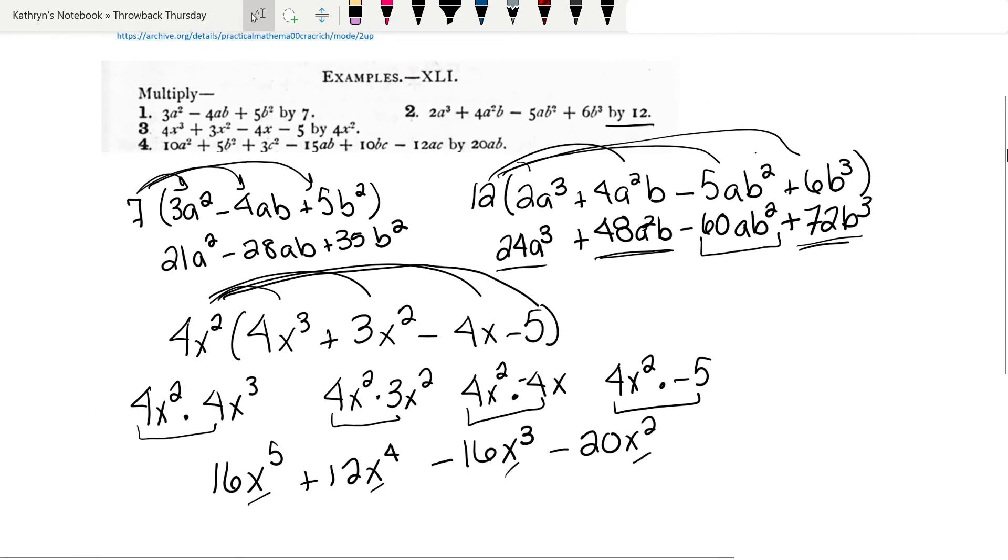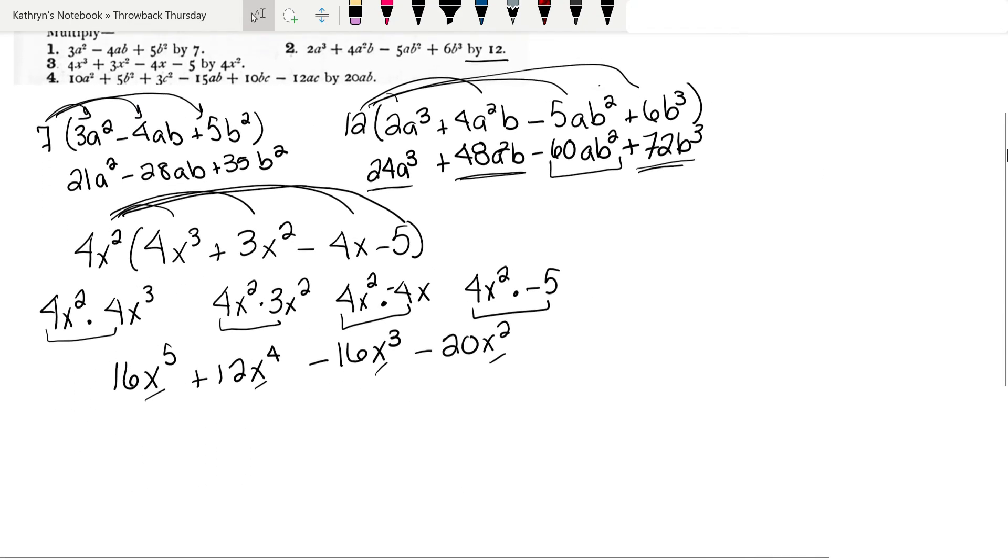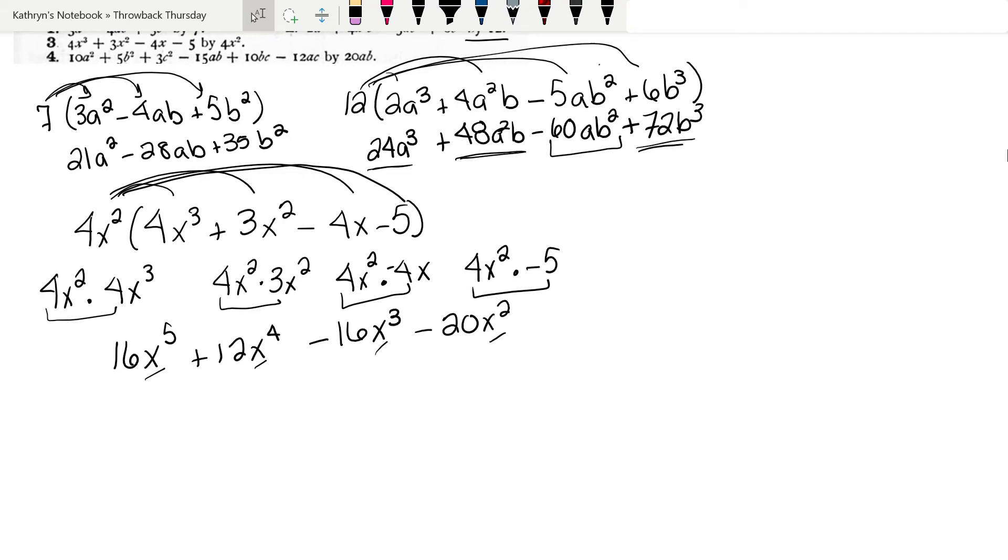We have one more. I'm going to shrink this a little bit so I can write it out. We're going to take 20ab times 10a² plus 5b² plus 3c² minus 15ab plus 10bc minus 12ac. Yep, all of that stuff.